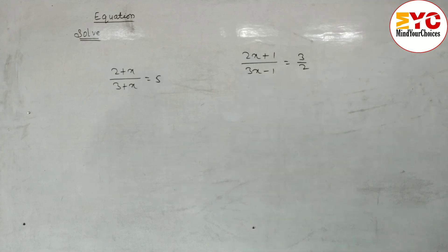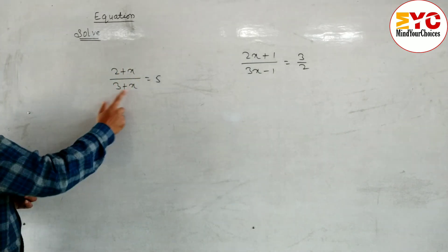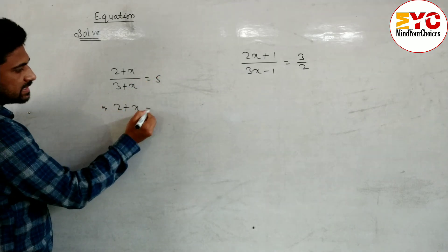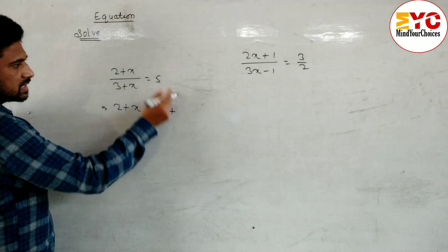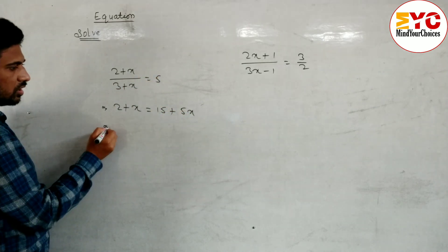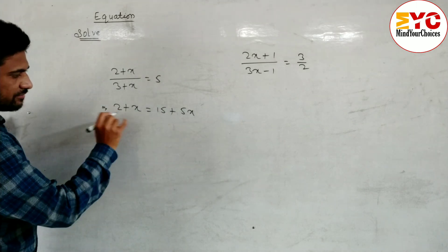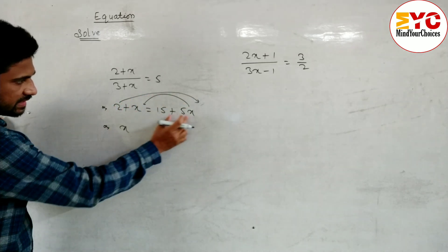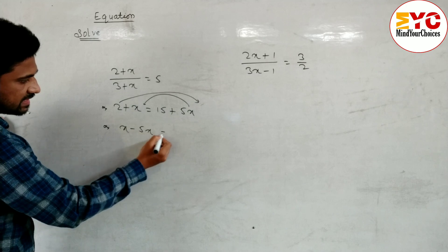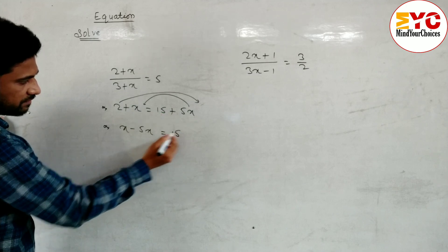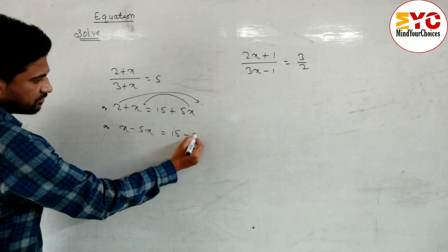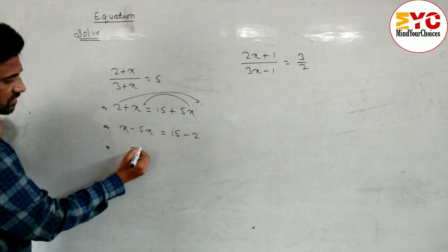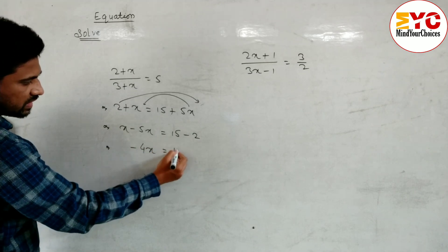Now look at next. The next question is: (2 plus x) by (3 plus x) is equal to 5. First of all we have to cross multiply: 2 plus x is equal to 5 into 3, which is 15, plus 5 into x is 5x. Now we have to arrange like terms — 5x we have to take to the front and 2 at the back. Here is plus 5x so we have to write minus 5x, is equal to 15. Then 2 you have to take to the right side, so we write minus 2 because here is plus 2. When you subtract these two we get minus 4x, and subtracting the right side we get 13.